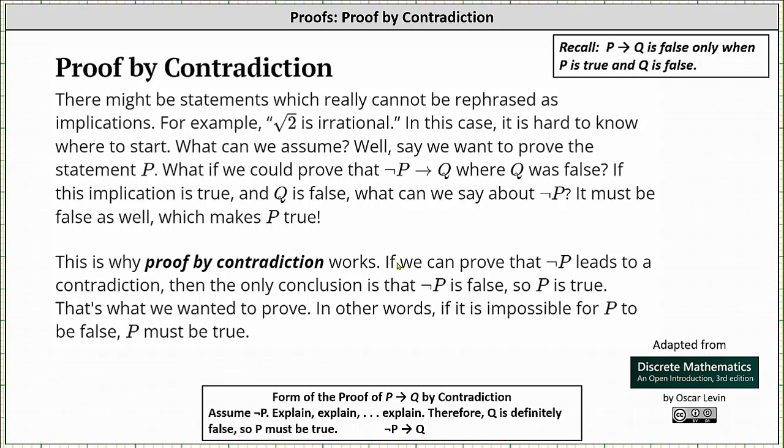This is why proof by contradiction works. If we can prove that not P leads to a contradiction, then the only conclusion is that not P is false, so P is true. That's what we wanted to prove. In other words, it is impossible for P to be false. P must be true.